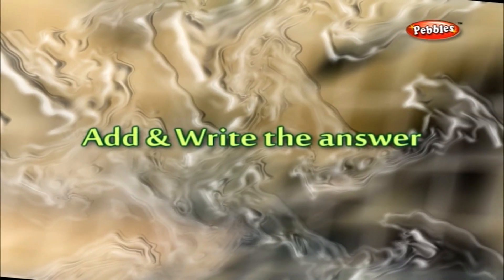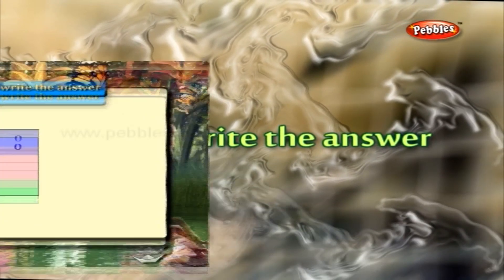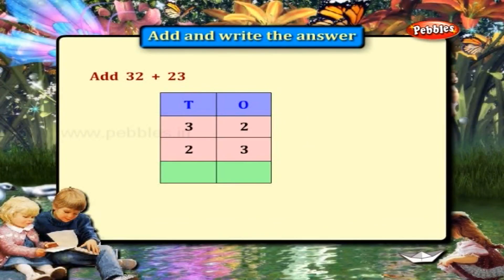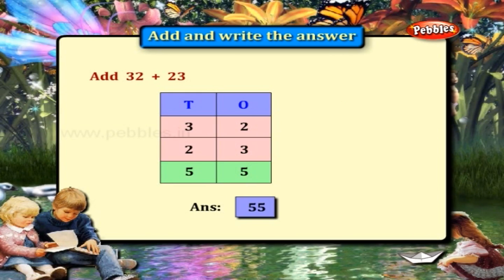Add and write the answer. 32 plus 23. Add the 1's place: 2 plus 3 is equal to 5. Add the 10's place: 3 plus 2 is equal to 5. Answer: 55.